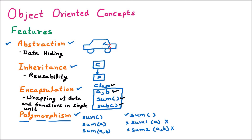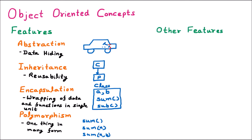Any language supporting all four features — abstraction, inheritance, encapsulation, and polymorphism — is called an object-oriented programming language, such as C++, Java, and .NET. From these four features, there are some other derived features which we will now discuss.